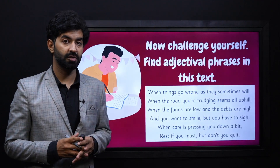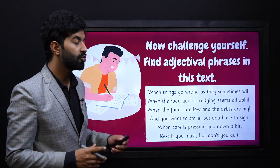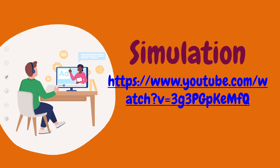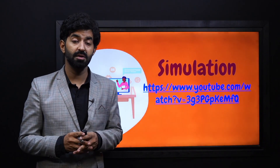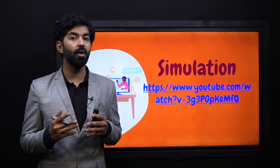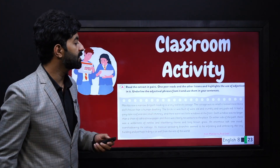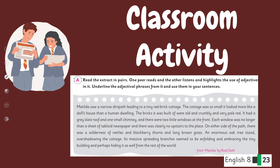Now, challenge yourself! Find adjectival phrases in the given text. You have to read the text and find adjectival phrases. It's also time to watch the simulation video — you can watch it later to learn more about adjectival phrases and how to form them for use in speech and writing. For your classroom activity, from page 23 of your book, read the extracts in pairs: one peer reads and the other listens and highlights the use of adjectives, underlining the adjectival phrases and using them in your own sentences.